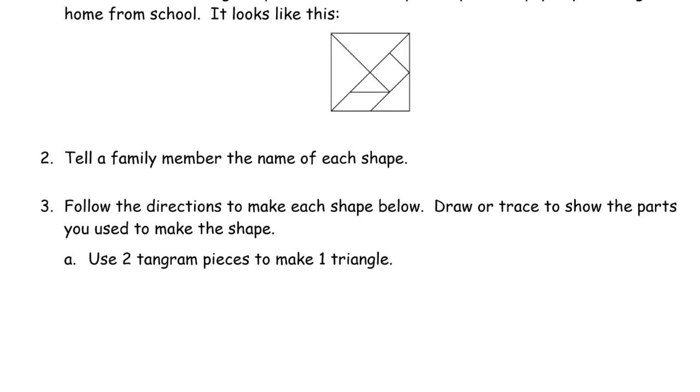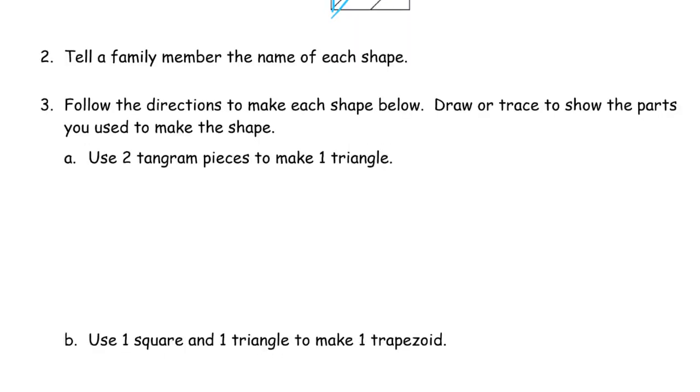And here's for A. This right here is two triangles put together to make one triangle. It doesn't have to be these two pieces that you put together to make a triangle, but that's an easy example right there. So I'm going to draw that.